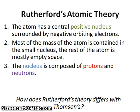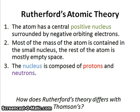Based on these observations, Rutherford came up with a new atomic theory. The first point he proposed was that the atom has a central positive nucleus and this is surrounded by the negative electrons. The second point is that most of the mass of the atom is contained within this small nucleus and the rest of the atom is empty space.